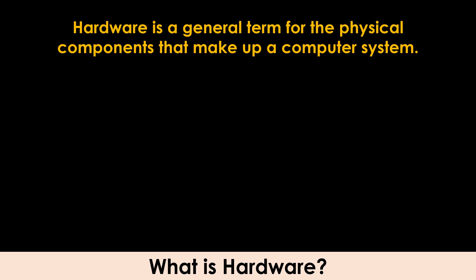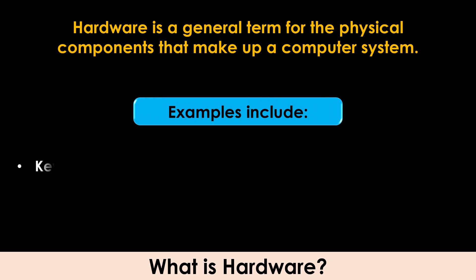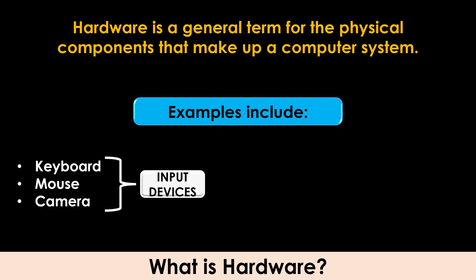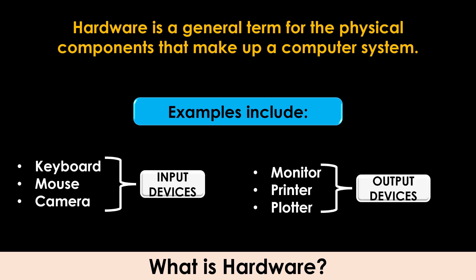Hardware is a general term for the physical components that make up a computer system. For example, the keyboard, mouse, and camera are all examples of input devices. Monitor, printer, and plotter are all examples of output devices.